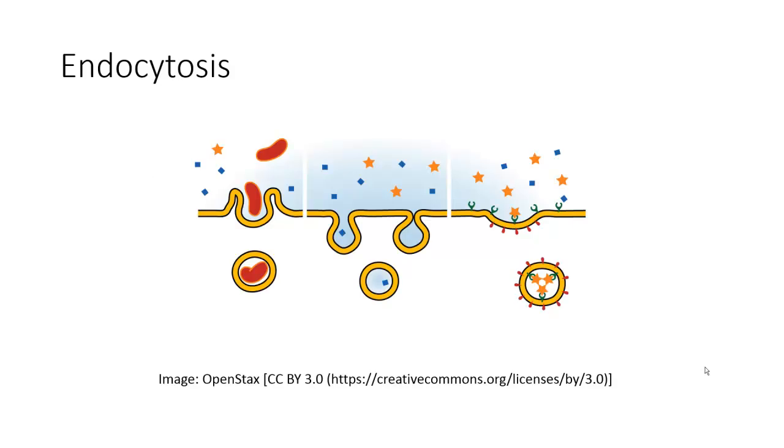In this image we can see the three main forms of bringing stuff into the cell, which we refer to as endocytosis. On the far left, if we want to bring something bulky and solid into the cell, essentially if we want to eat something that's outside of the cell, we're going to do phagocytosis, which means cell eating.